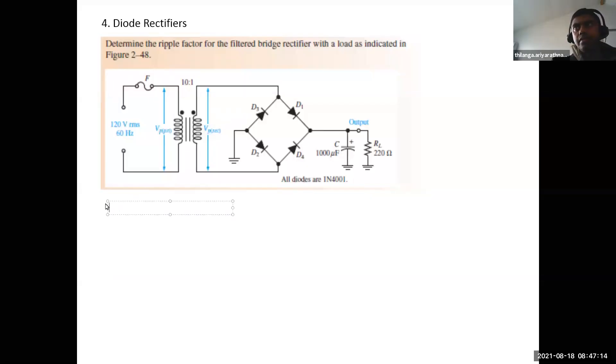OK guys, determine the ripple factor. Ripple factor mean ratio between ripple to DC voltage. So to find that one, what we need to find - we need to find secondary VP. Secondary voltage transformer turns ratio is given.